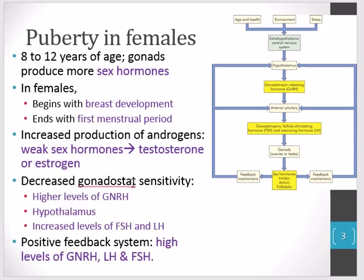During puberty, gonadostat sensitivity is decreased, leading to higher levels of GnRH released by the hypothalamus. This increase in GnRH raises follicle-stimulating hormone (FSH) and luteinizing hormone (LH) levels, initiating a positive feedback system with high levels of GnRH, LH, and FSH driving many of the changes seen during puberty. Once the first menstrual cycle begins, the hormones settle into a more regular rhythm.